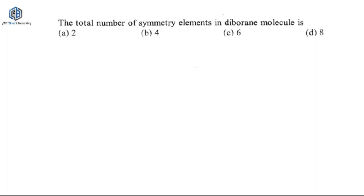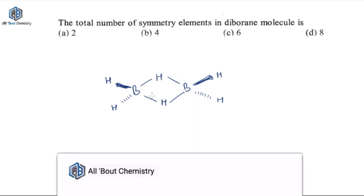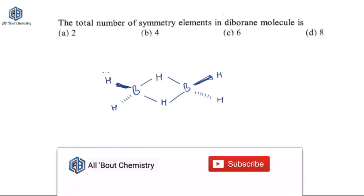So they are talking about the diborane molecule. Before going into that, you should know the structure of diborane. Diborane has two boron atoms attached to each other through hydrogen via three-center two-electron bonds, and the other two hydrogens are off-plane — meaning they are not on the same plane. The molecule is drawn with two hydrogens in the plane and two bonds above the plane and two bonds below the plane.